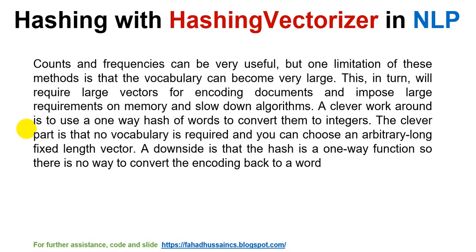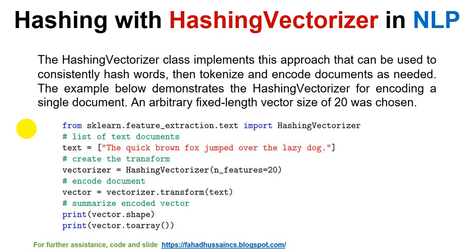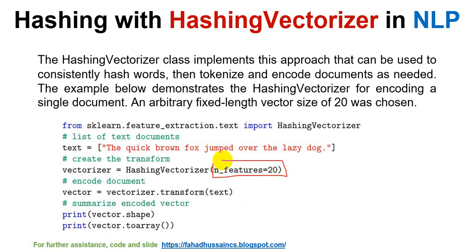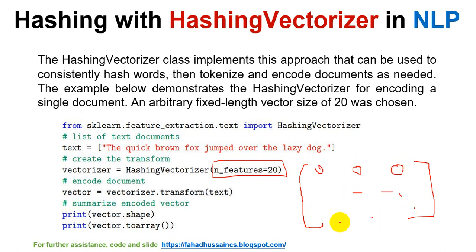The whole document we want to convert to hash form will result in a vector of a specific fixed range. In the code you will see the sentence 'the quick brown fox jumped over the lazy dog', and the n_features parameter represents the vector size you want to use. This can be represented as a sparse matrix. The hashing vectorizer implements this approach to consistently hash words, then tokenize and encode documents as needed.